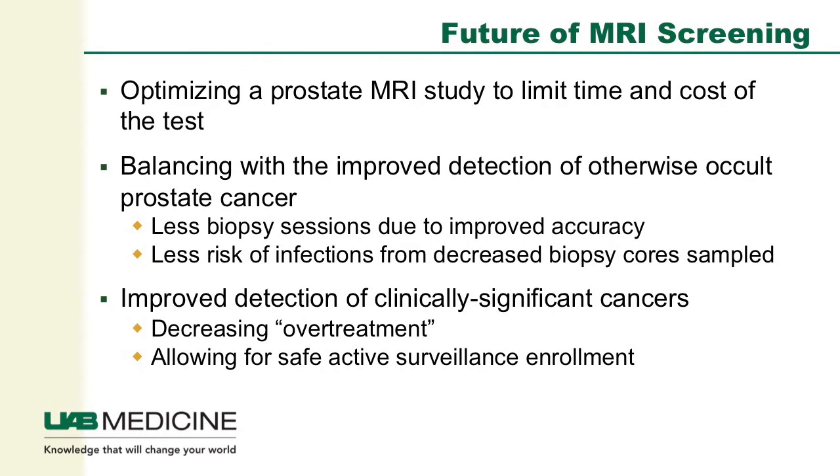The future of MRI screening in prostate cancer involves further optimizing the prostate MRI study to limit time and cost, as was done with the biparametric study at the NIH. This improved detection of otherwise occult prostate cancers will lessen the number of biopsy sessions patients need to undergo and decrease the risk of infections due to fewer biopsy cores sampled. The improved detection of clinically significant cancers also decreases over-treatment of prostate cancer, and allows for safer active surveillance enrollment and confirmation that patients are appropriately staged if active surveillance is the route chosen.